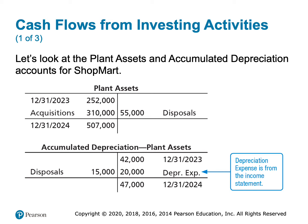Looking at accumulated depreciation: it was $42,000 last year and $47,000 this year. We had depreciation expense of $20,000 — depreciation expense is a debit to depreciation expense and a credit to accumulated depreciation, so we credited accumulated depreciation for $20,000. When we sold the plant asset, we had to remove the accumulated depreciation, so we debited accumulated depreciation for $15,000. That's how we arrive at the ending balance of $47,000.